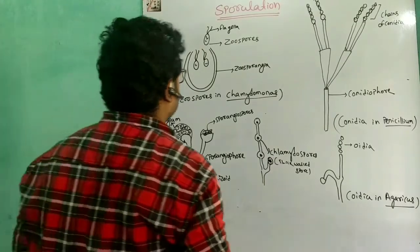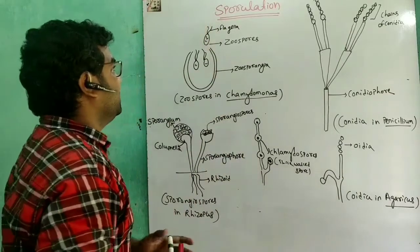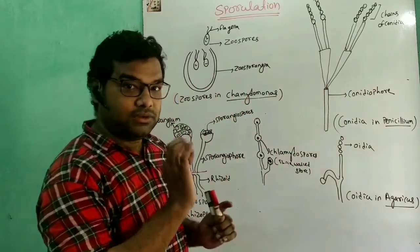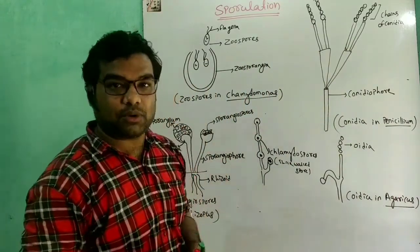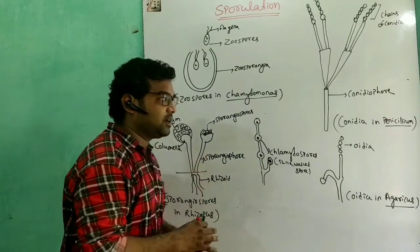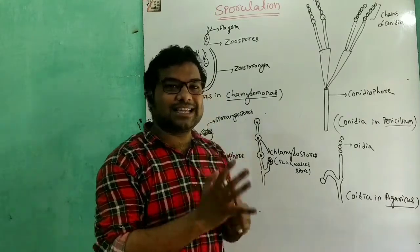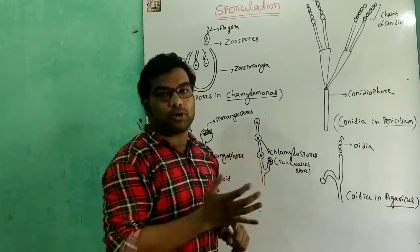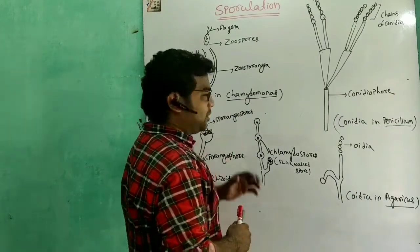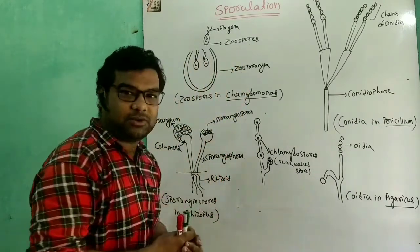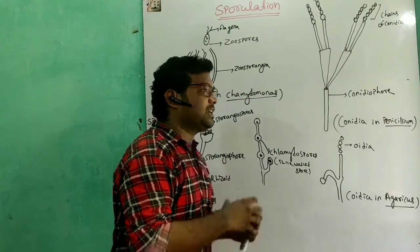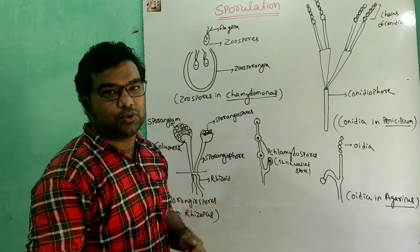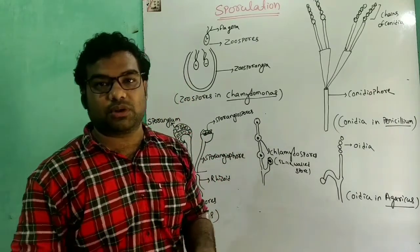The next step of asexual reproduction is sporulation. Sporulation is the formation of small unicellular bodies called spores. When the spore gets matured and detached from the parent body, it grows into a new individual under favorable conditions.